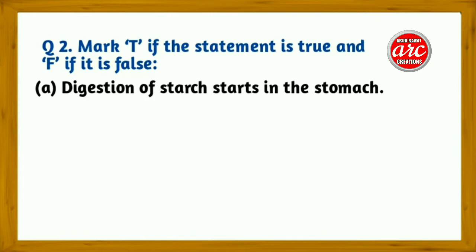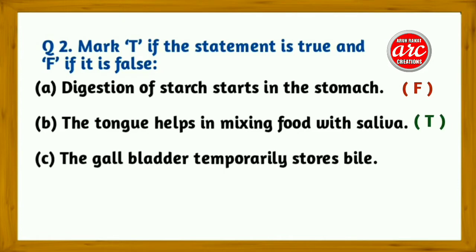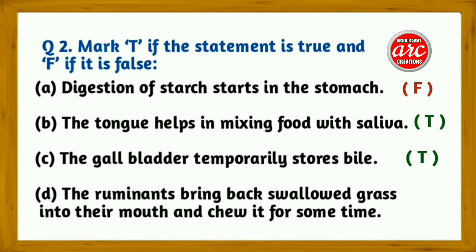(a) Digestion of starch starts in the stomach — False. (b) The tongue helps in mixing food with saliva — True. (c) The gallbladder temporarily stores bile — True. (d) The ruminants bring back swallowed grass into their mouth and chew it for some time — True.